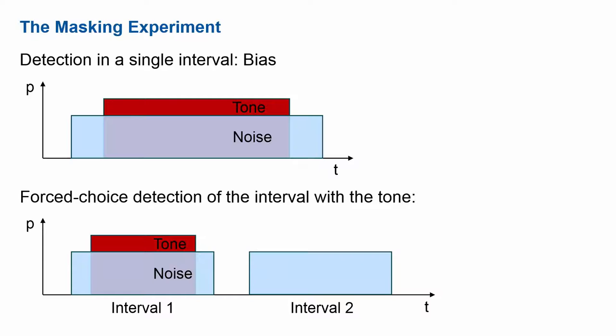We want to objectify how experiments come up with results. To do that, we often use forced choice experiments where we play two, three, or even more intervals and hide the signal in one of those intervals. The tone can be in the first or in the second interval, randomly chosen, so the listener does not know whether the tone is in the first or second interval. The person has to detect which interval contained the signal. By guessing you get 50% correct; 75% correct would be our threshold; 100% correct means you always detect the tone correctly. This is the standard procedure used for masking experiments.